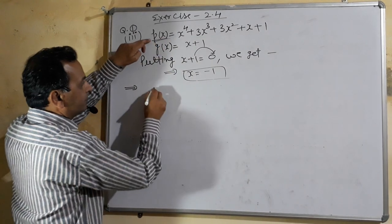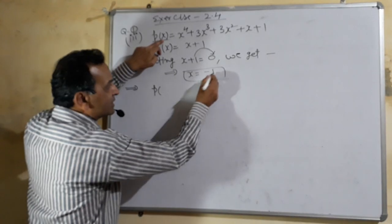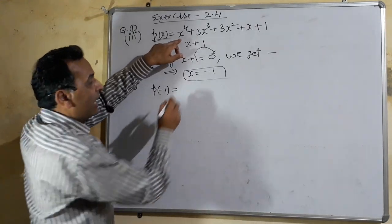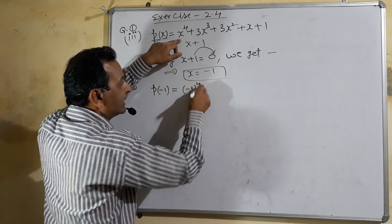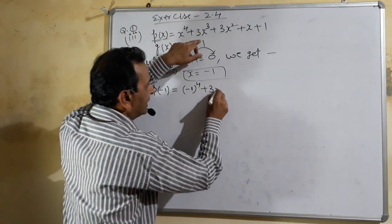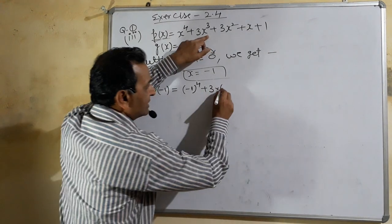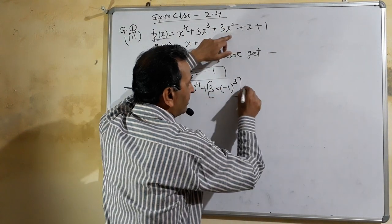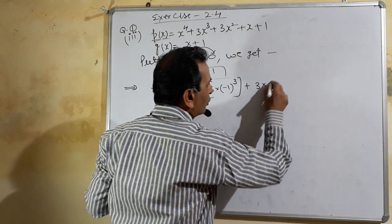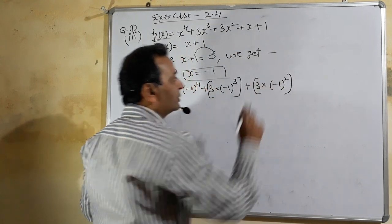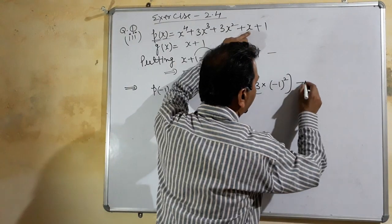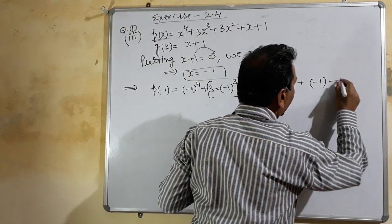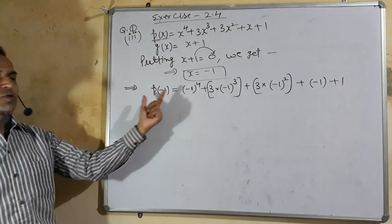So this implies P(x) becomes P(-1). On the right-hand side: x⁴ becomes (-1)⁴, plus 3 multiplied by x³ becomes (-1)³ in square bracket, plus 3 multiplied by x² becomes (-1)², plus x becomes (-1), and last plus 1. Now solve using exponential rules. The base is -1, power 4 is even, so (-1)⁴ = +1.